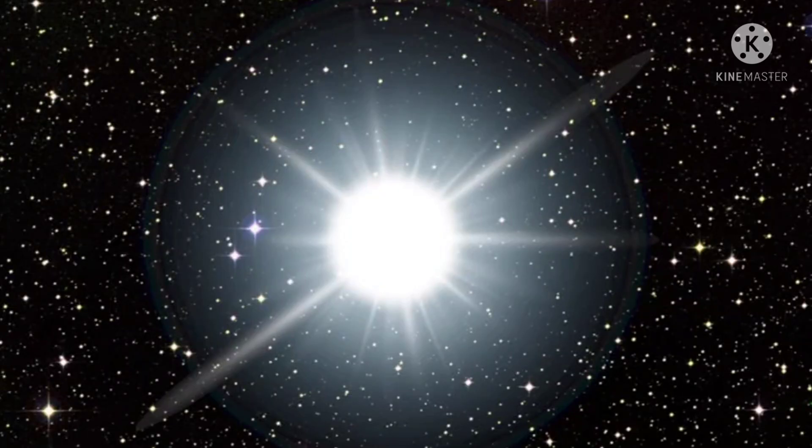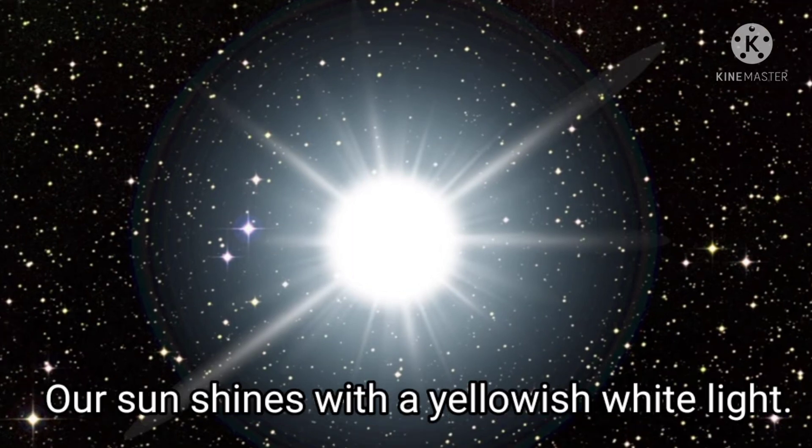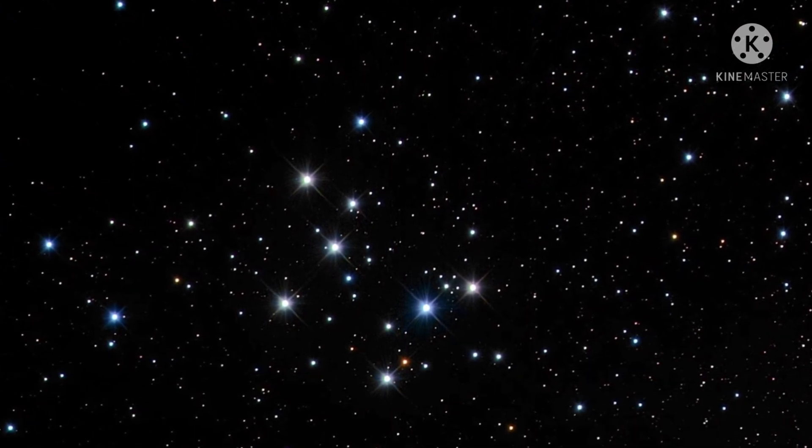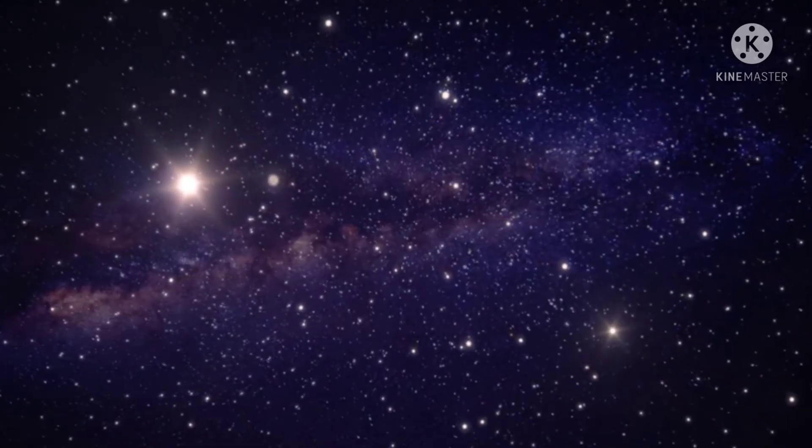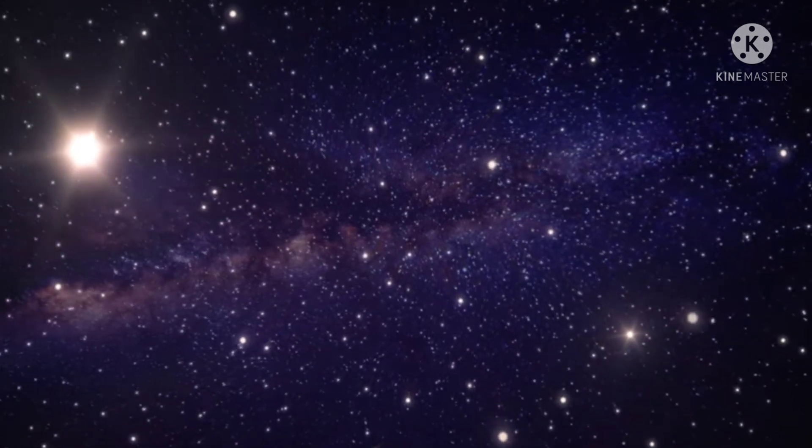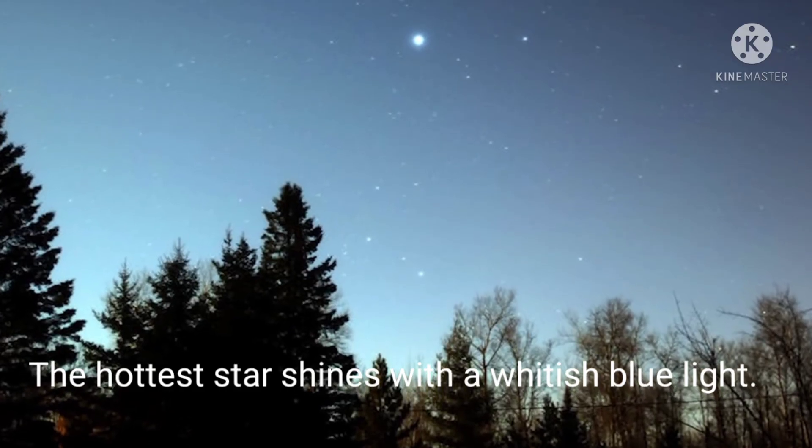Children, it is interesting to note and realize that our sun shines with a yellowish white light. All the other stars are however not yellowish white. Stars vary in size, brightness, temperature, and color. The hottest stars shine with a whitish blue light.